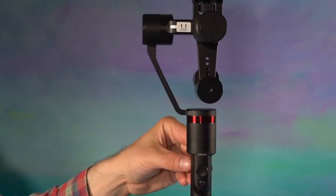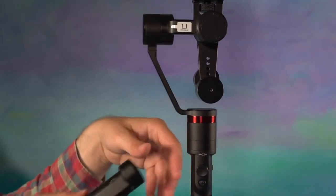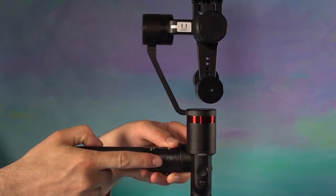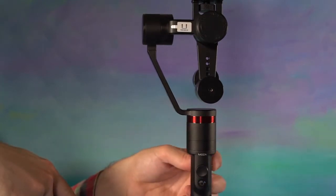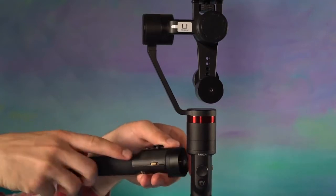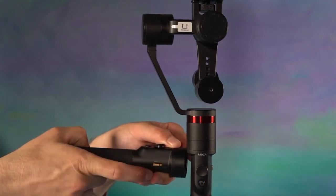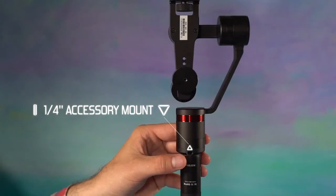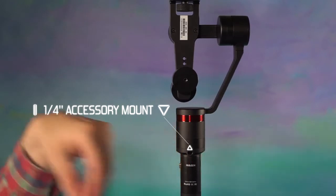On one side of the handle is a USB charging/data port and on the opposite side is a focus switch that has no function with 360 cameras. The focus switch currently only works with the Moza Mini C. On the back of the Moza handle is a one-fourth accessory mount.